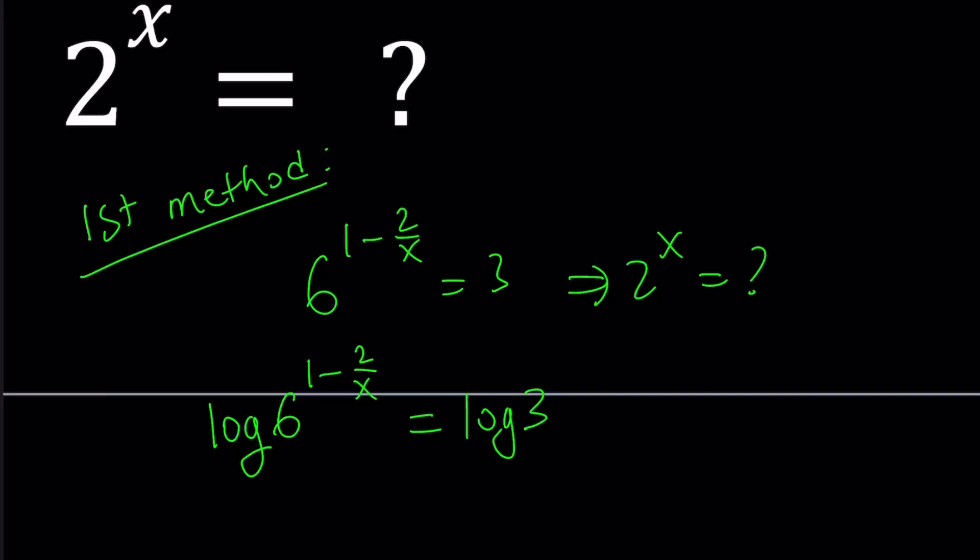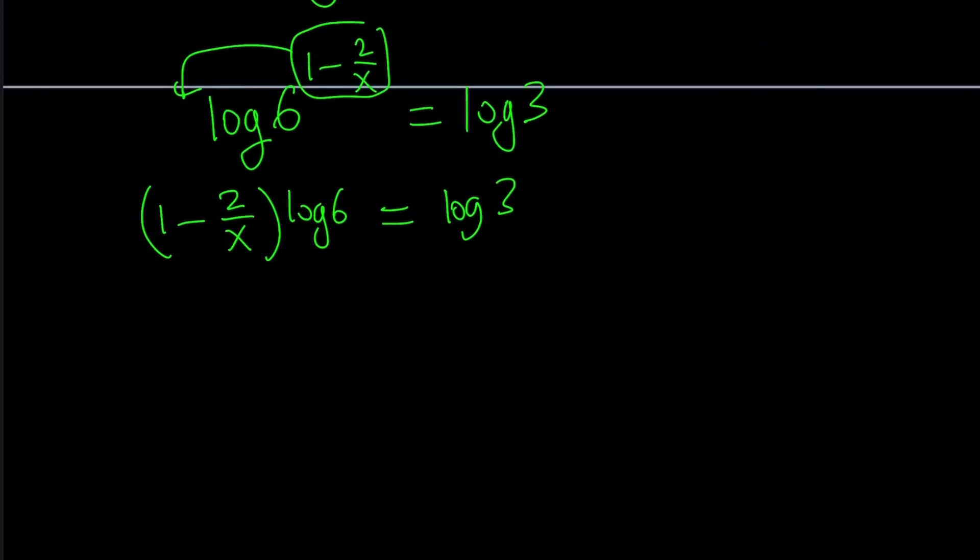And then we're going to use the power rule. We're going to go ahead and move this to the front. This is going to give us 1 minus 2 over x multiplied by log 6 equals log 3. Now we can go ahead and divide both sides by log 6 to get the x terms by itself. So we can kind of write it like this. My goal is to solve for x here. So let's go ahead and manipulate this a little bit.